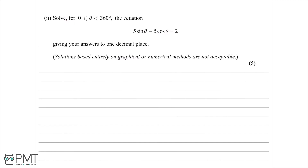Now let's move to part two: range of θ between 0 and 360 degrees, the equation 5 sin θ minus 5 cos θ equals 2. We need to give answers to one decimal place. We're in the range 0 to 360, so let's work in degrees. We can't solve this normally, so we need to express 5 sin θ minus 5 cos θ in one trigonometric form using the compound angle formula.